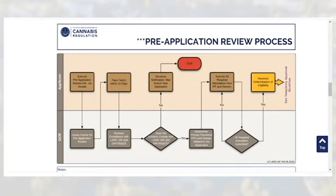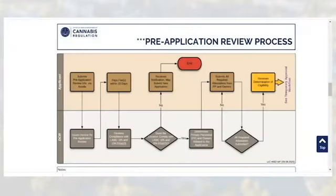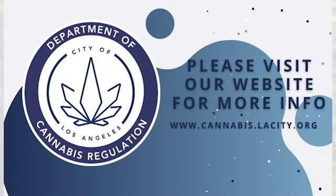After all forms and documents have been submitted, the department will verify that each individual identified as primary personnel and/or owner submitted the primary personnel and owner attestation form. Finally, after all required attestations have been received and verified, DCR will issue a determination of eligibility for further processing and invoice the applicant for the temporary approval application fee, if applicable. This will allow applicants to move forward with a temporary approval procedure. The department will continue to update the website with video tutorials and additional information. Please regularly check the website for the latest information, and sign up for email alert updates by visiting the about menu on the website.